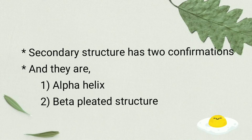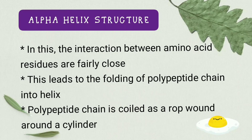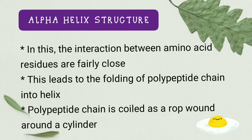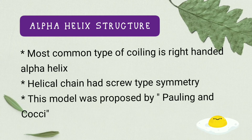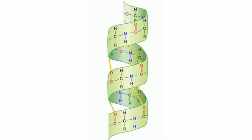Secondary structure mainly has two conformations: alpha helix and beta pleated structure. In alpha helix, when amino acid residues have close interaction together, this results in the folding of the polypeptide chain. As a result, the polypeptide chain attains a coil shape, like a rope wound around a cylinder. Mostly such folding occurs on the right-handed side. This kind of structure has a screw-type symmetry and was invented by Pauling and Corky. I have given the figure so you can clearly understand the structure.